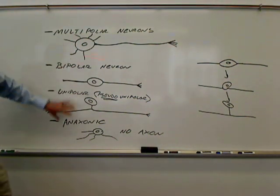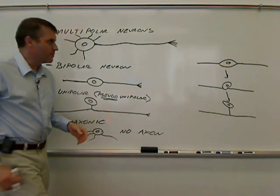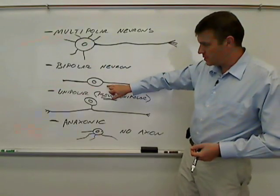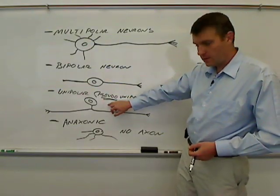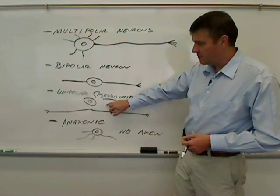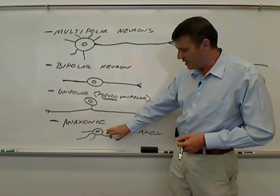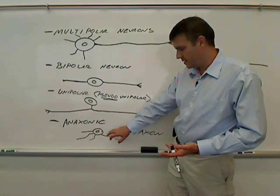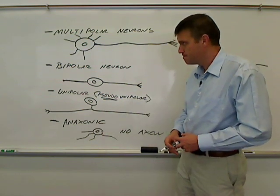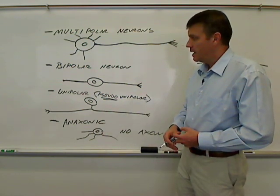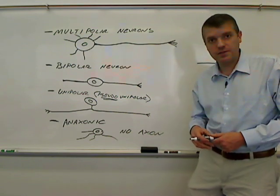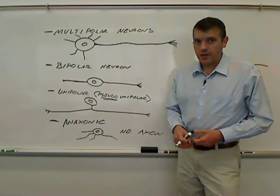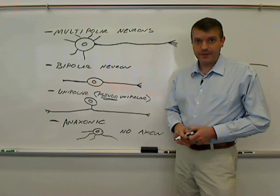Those are the major structural types. For the purposes of my class, if you know this structure is multipolar, this one is bipolar, and this one is unipolar, you'll do fine. For the anoxonic, I will literally tell you it doesn't have an axon, and that tells you right away it's anoxonic. And those are the structural classifications of neurons. As always, if there's any questions, please feel free to contact me. Thanks again for watching.